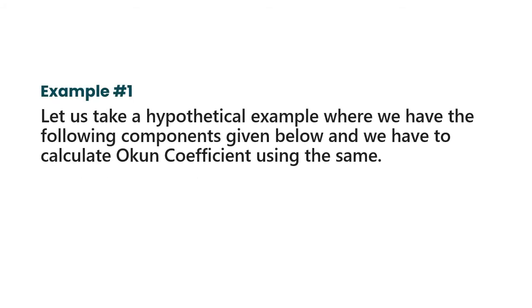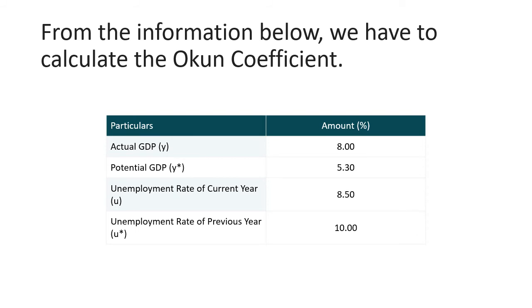I have taken up a hypothetical example and I want you all to try this question and put your answers in the comment box. I'll calculate the output gap for you; you just have to put in the values. In this example, the following information is given: actual GDP is 8, potential GDP is 5.3, the unemployment rate of the current year is 8.5, and the unemployment rate of the previous year is 10.